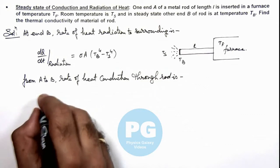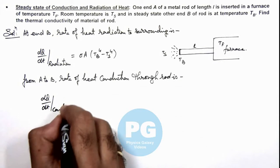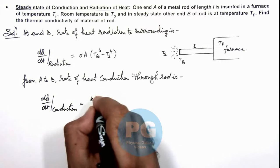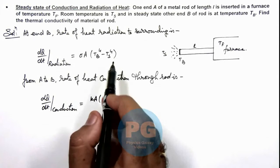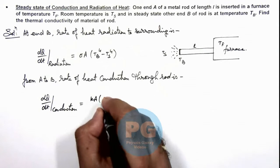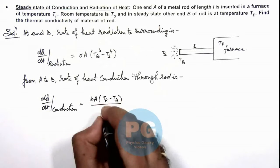Here we can write dQ/dt which is being conducted. This is dQ/dt of conduction, we can write kA, and the temperature of end A is equal to that of the furnace, so this is (T_f - T_b)/l.